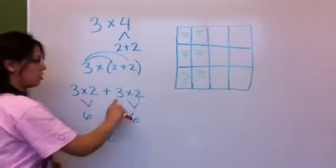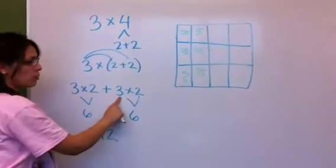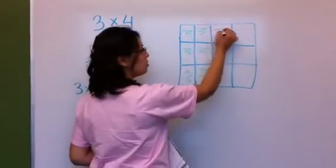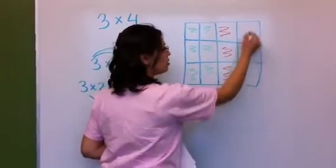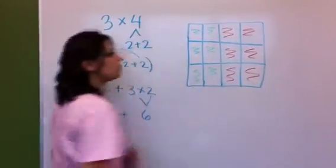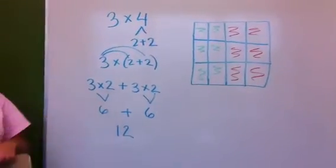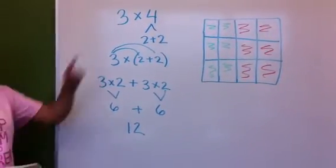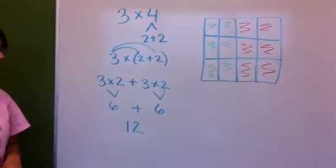Then you would have the other part, which is 3 rows with 2 in each row. That also gives you 12, so 3 times 4 is 12.